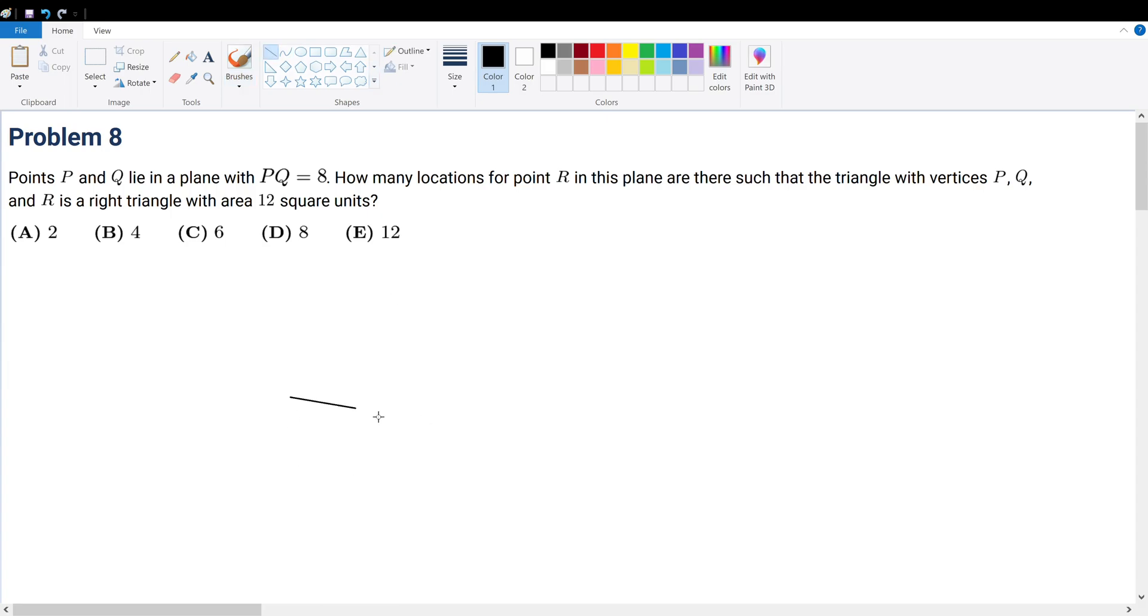So let's first draw ourselves PQ. This will be PQ. Now we're basically trying to find how many points are there such that we have this relationship. Well, first of all, how do we find the area of a triangle? The area of a triangle is always half base times height, where base is the base length and h is the height.